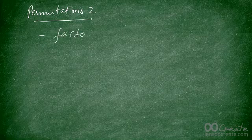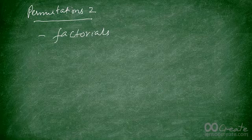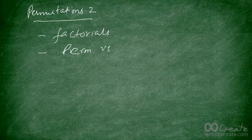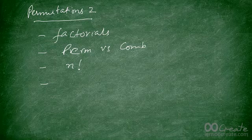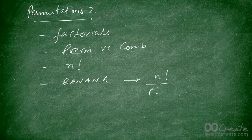Welcome to the second video on permutations. So far we have discussed what factorials are and how to use them. We have discussed the difference between permutations and combinations, how to arrange objects in a straight line using n factorial, and how to arrange objects when certain objects are repeated — for example, the banana case, using n factorial divided by p factorial times q factorial.